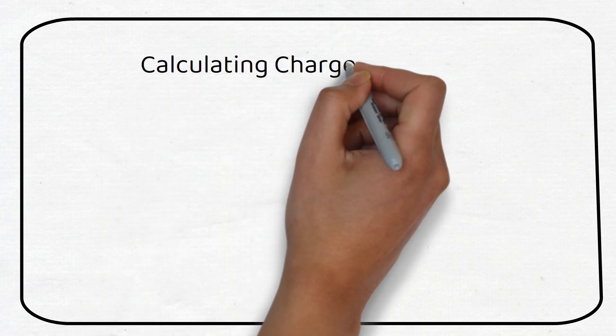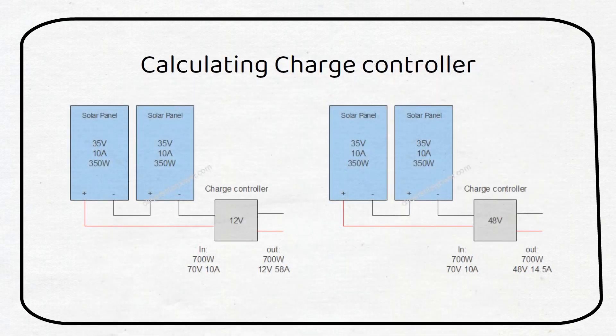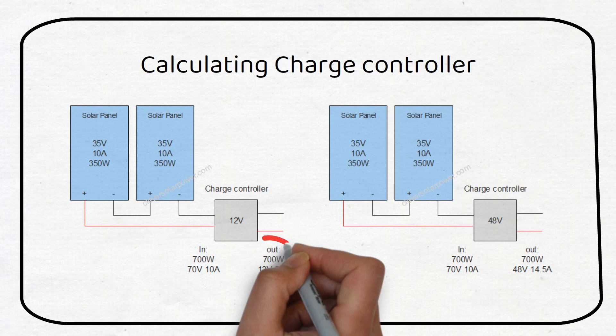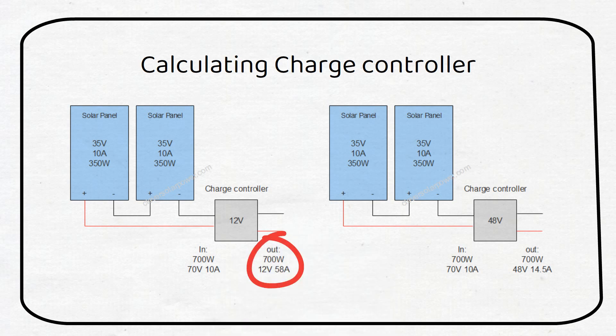A tip is to increase the battery voltage. If we have a solar panel string of two panels in series at 35 volts and 10 amps, at the charge controller, this will be a total of 70 volts and 10 amps or 700 watts of solar. When we want to charge a 12 volt battery bank, we will need a 60 amp charge controller. When we use a 48 volt system, we only need a 15 amp charge controller. Increasing the battery voltage will reduce the cost of the charge controller.